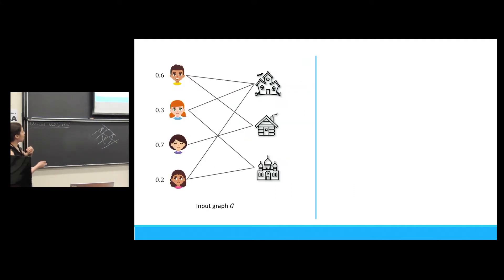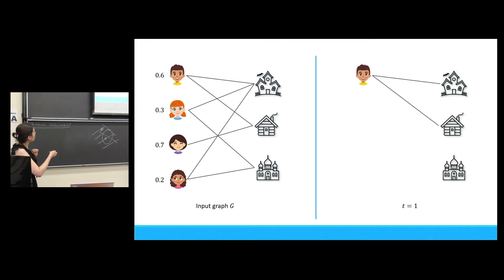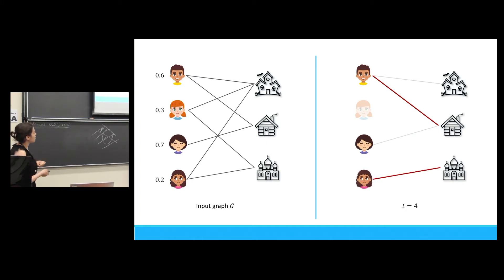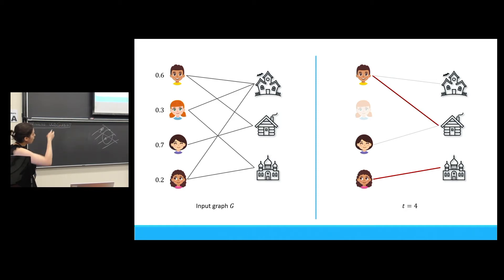Here is an example. We have offline vertices, online vertices arriving in order, and their probabilities. At time one, the first vertex arrives and we decide to match it. The second vertex doesn't arrive. At time three, a vertex arrives but its only neighbor is already matched. At time four, we match this vertex. The matching I ended up with has size two, even though I made the best decision at any given time given my limited knowledge. But the offline solution could find a matching of size three.